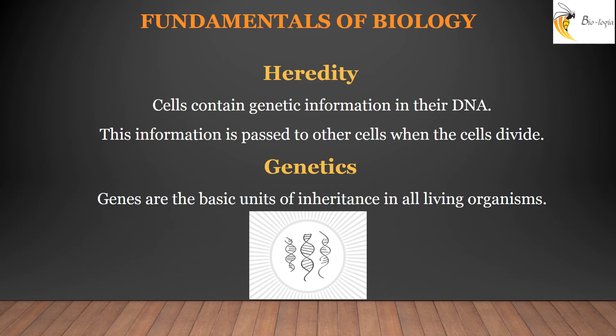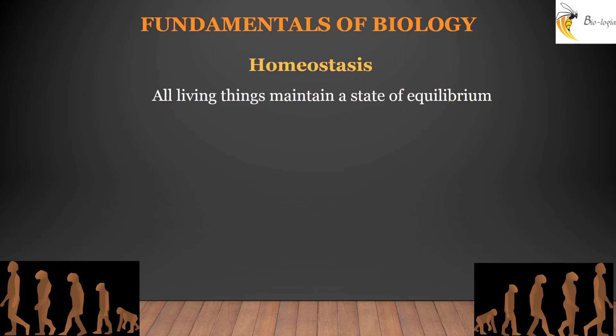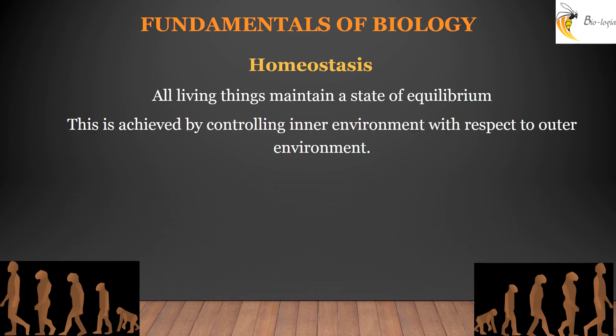The genetic information passed from one cell to another, or from parents to offspring, is termed inheritance. So genes are termed as the basic unit of inheritance in all living organisms. There is always a state of balance and equilibrium in a living organism and its environment. Organisms maintain this balance by controlling their inner environment whenever the external environment changes. This phenomenon is termed homeostasis.